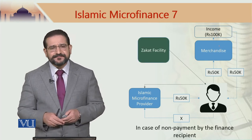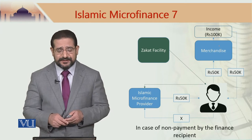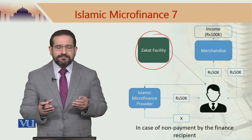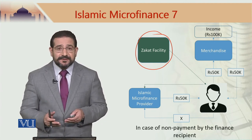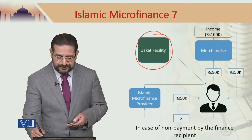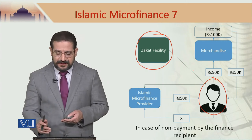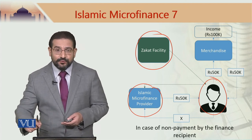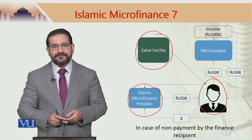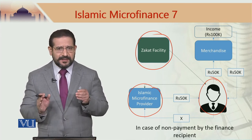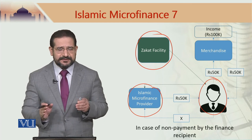In that case, normally — and especially this structure is very popular in Indonesia — a zakat facility is set up. People in financial distress are beneficiaries of zakat money anyway. So, if this person is in distress, the Islamic microfinance provider would ask this recipient to have access to this zakat facility to pay its debt towards the Islamic microfinance provider.